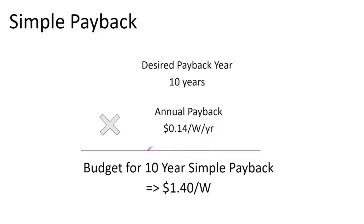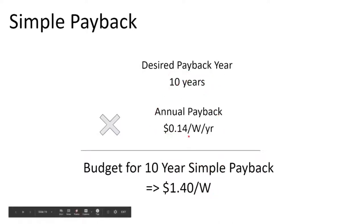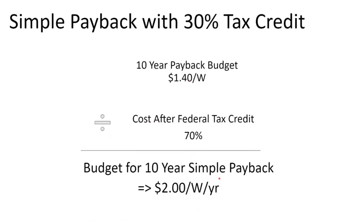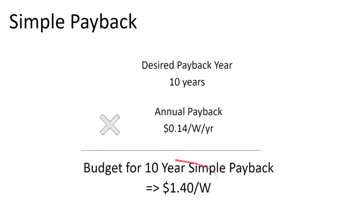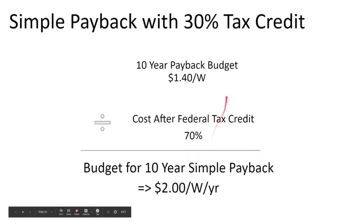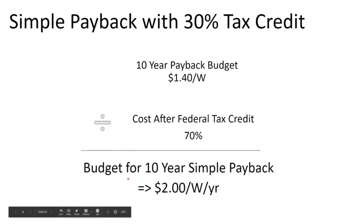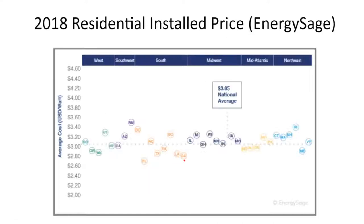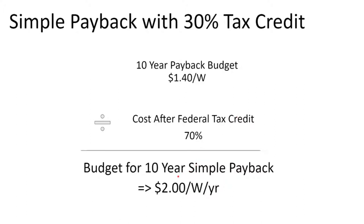The upfront tax credit is commonly included in simple payback calculations. Currently the tax credit is 30%, set to drop to 26% in 2020–2021. After taking the 30% tax credit into account, the project budget should be no greater than $2 per watt to achieve a 10-year payback. According to 2019 solar installation pricing from EnergySage, average solar installation pricing is closer to $3 per watt. Applying a 30% tax credit, a 1.4 kWh per watt per year production rate, and 10 cents per kWh electric rate, the simple payback on a $3 per watt installation would be 15 years.